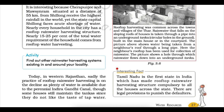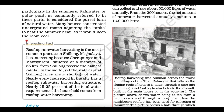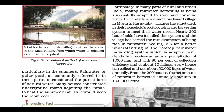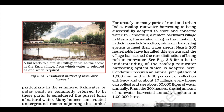In western Rajasthan, sadly, the practice of rooftop rainwater harvesting is on the decline as plenty of water is now available due to the perennial Indira Gandhi Canal, though some houses still maintain the tankas as they do not like the taste of tap water. Fortunately, in many parts of rural and urban India, rooftop rainwater harvesting is being successfully adapted. In a remote backward village in Mysuru, Karnataka, nearly 200 households have installed rooftop rainwater harvesting systems, earning the village the rare distinction of being rich in rainwater.